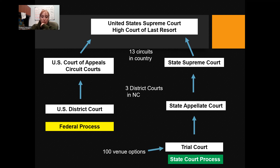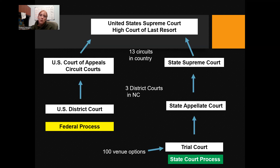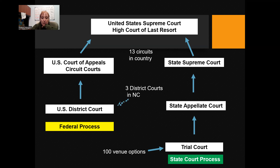In the federal process we have one less appeal, and instead of trial courts we have district courts. North Carolina has three districts — eastern, central, and western — each with at least one federal courthouse. If you are charged with a federal crime in, say, Oklahoma, you don't have to go to Washington D.C. to have your case heard. Each state has district courts in place as courts of original jurisdiction, where they are finding and defining the facts of the case.